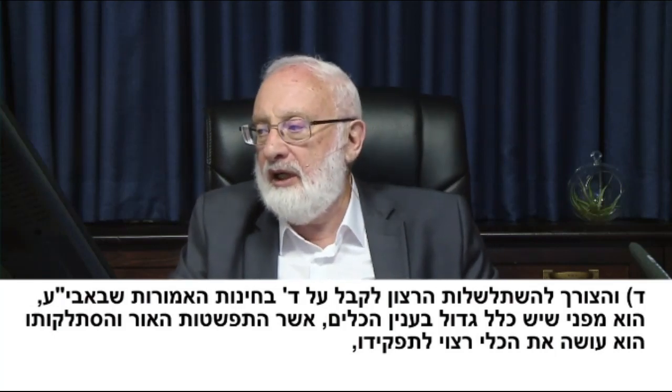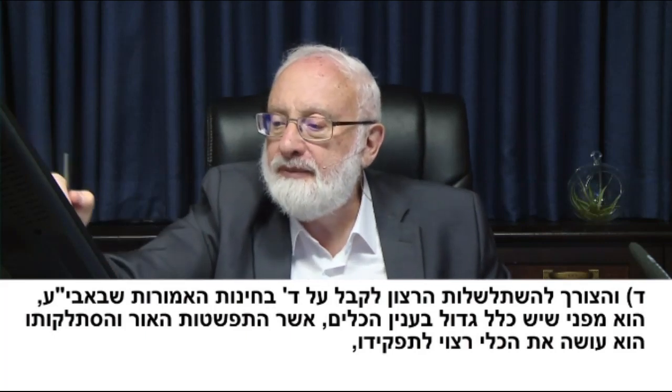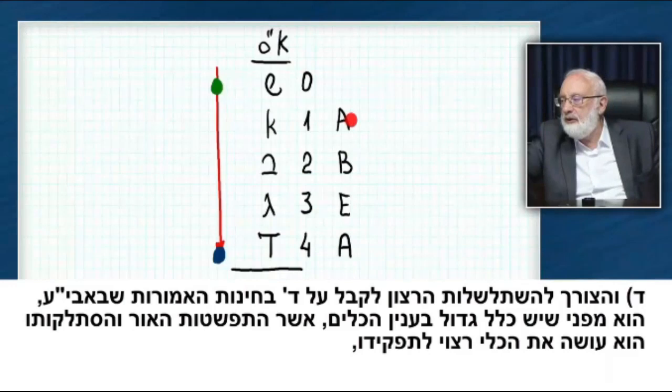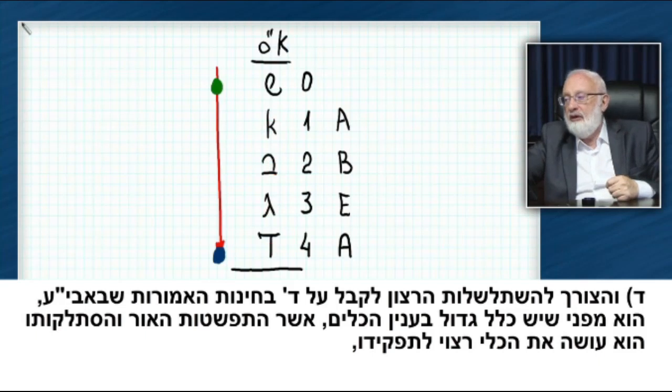And the need for the will to receive to cascade through the four letters. These 4 degrees, sometimes he calls them Aleph, Bet, Gimel, Dalet, or 1, 2, 3, 4, or Atzilut, Bria, Yetzirah, Asiyah, it doesn't matter how you call it.